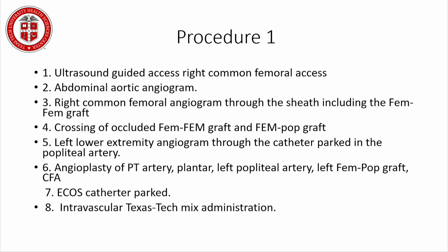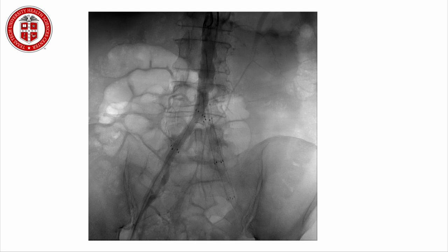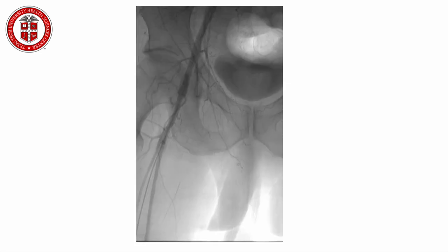An abdominal aortogram was obtained, showing severe disease — one limb completely down, the other with significant disease. Attempting to come from the radial or brachial approach was unsuccessful; nothing could pass. The vascular surgeon was contacted but was two and a half hours away. With the vascular surgeon offering to come, the presenter declined — a decision he later regretted. Using ultrasound, a fem-fem graft was located. He entered the graft, passed the wire, and was in the fem-fem graft.